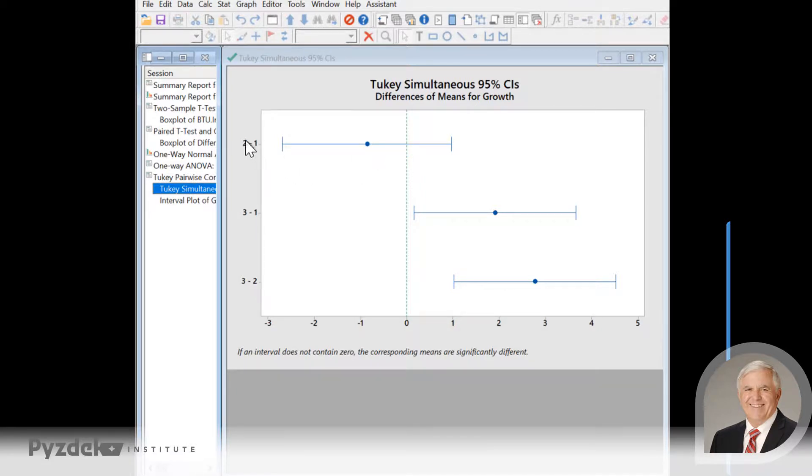Treatment one versus three, that interval does not include zero. So there are significant differences between treatments one and three, and also between treatments two and three, because the interval does not include zero.